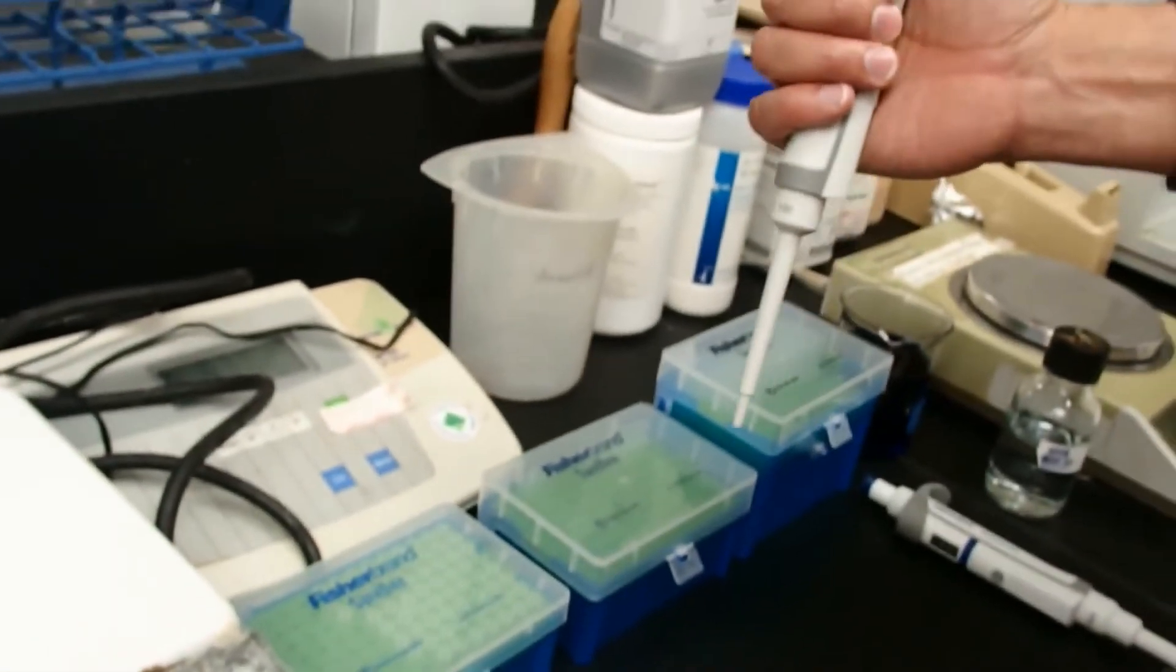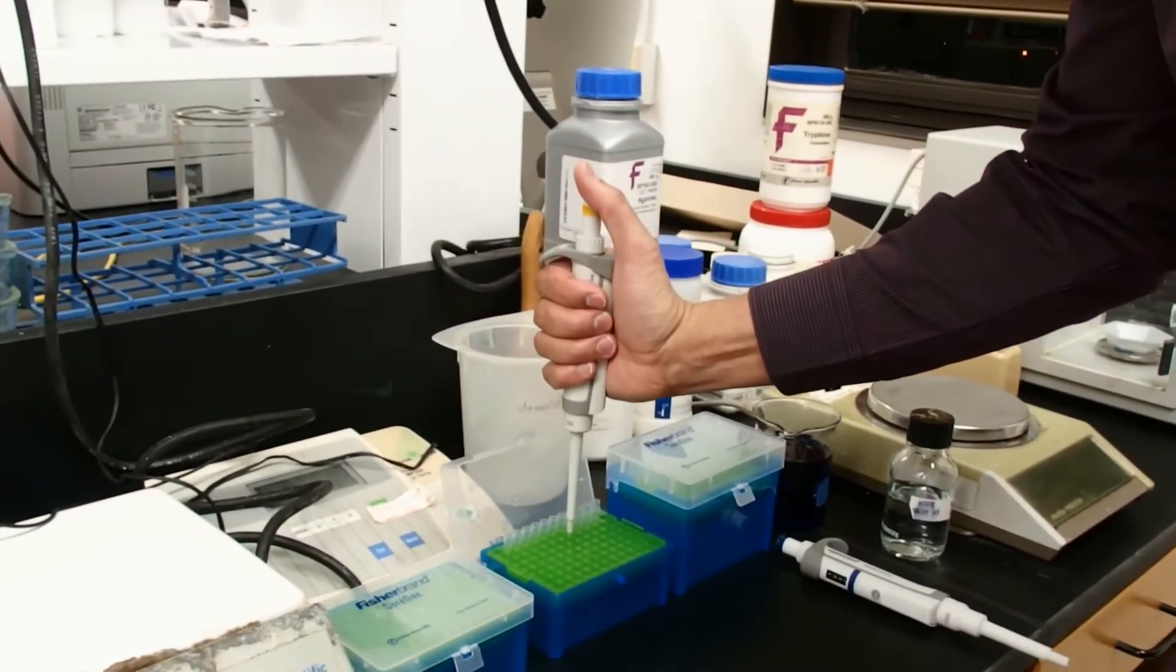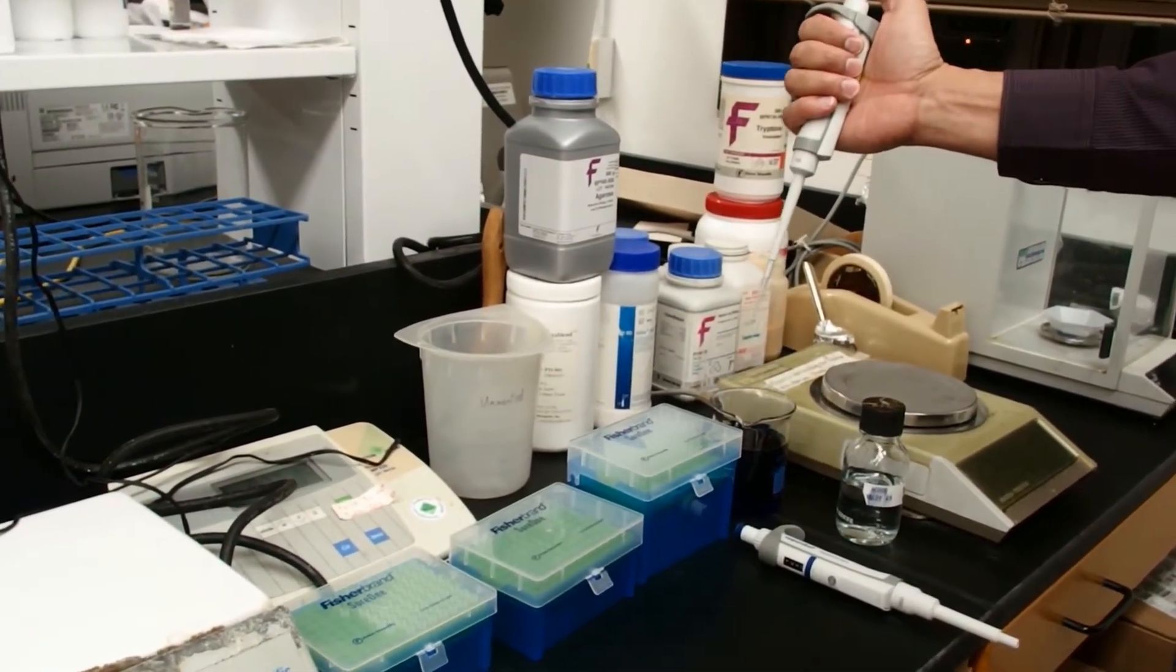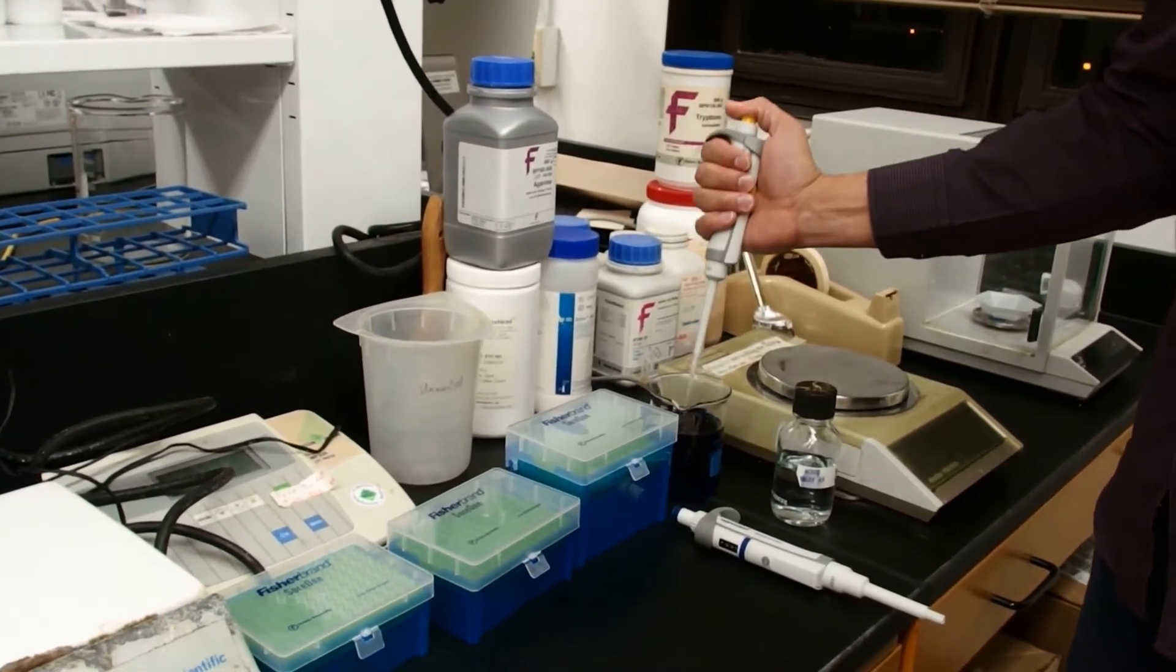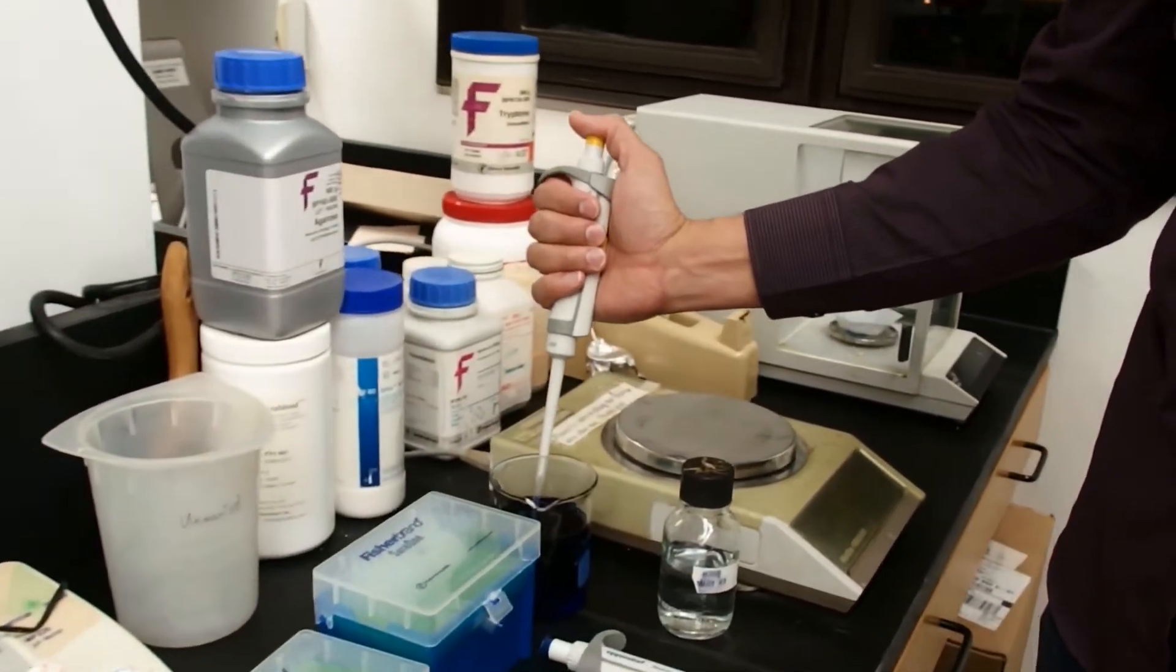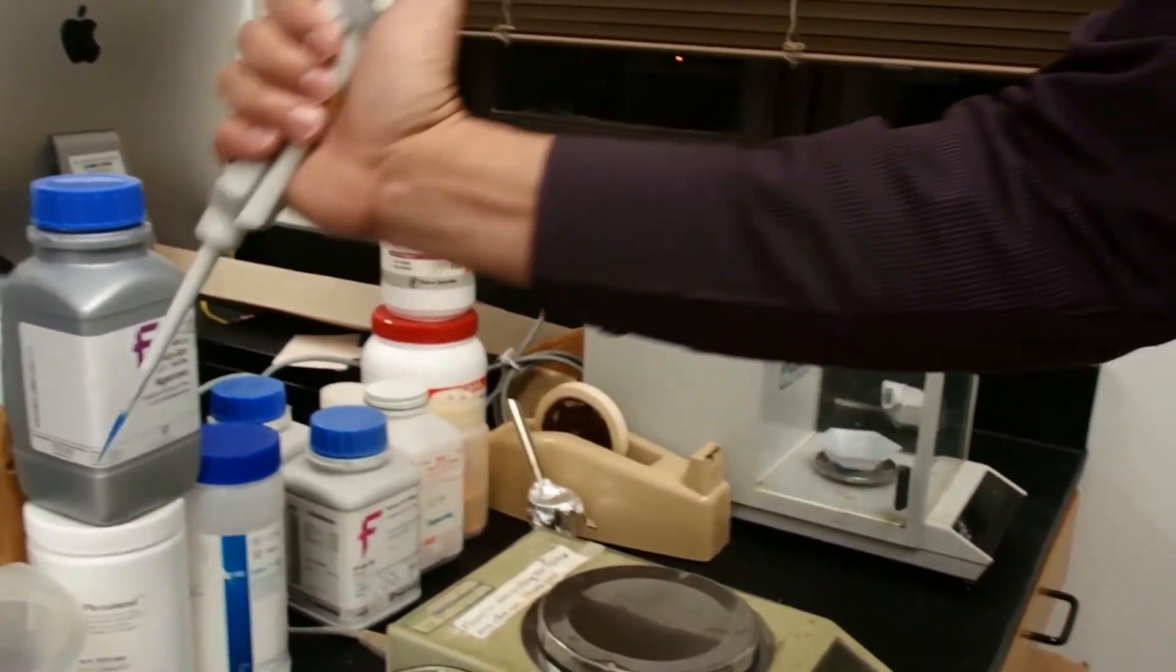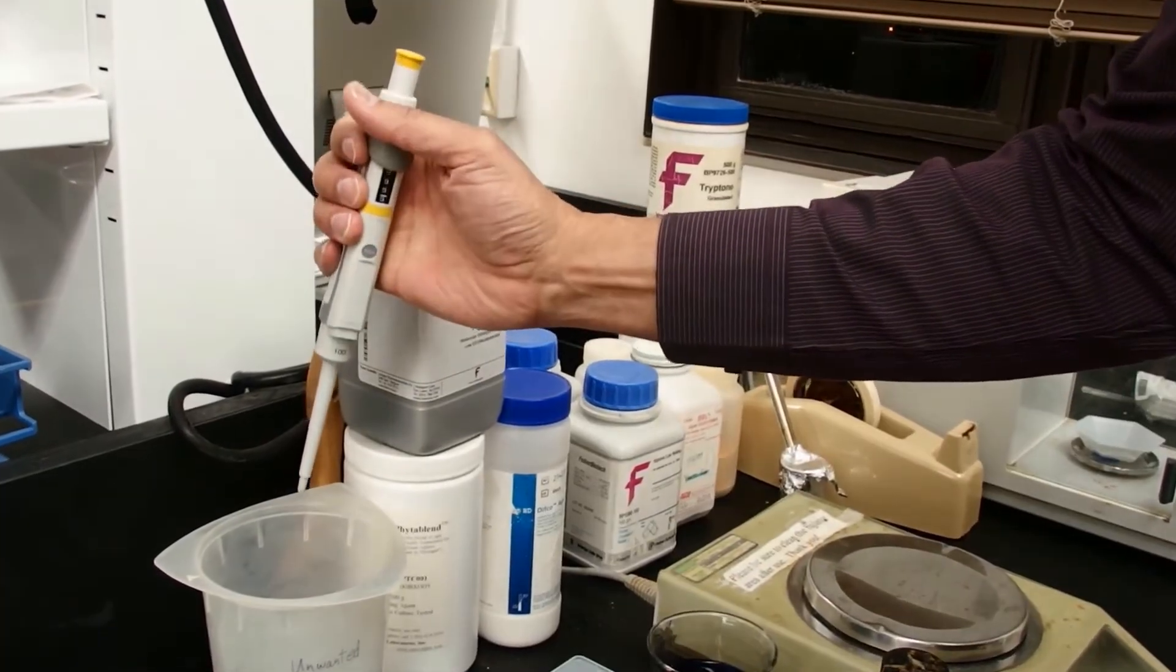Again, we'll hold our thumb in this area. It uses a different tip. We press the plunger to the first stop in the air, submerge it in the liquid 2 or 3 millimeters, and slowly pipette it up. Here we got our water. I'm just going to pipette this into the waste and eject this tip.